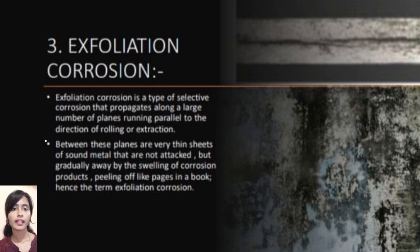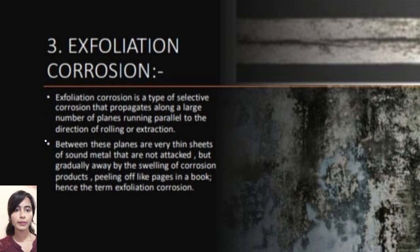Exfoliation corrosion. Exfoliation corrosion is a type of selective corrosion that propagates along a large number of planes running parallel to the direction of rolling or extrusion. Between these planes are very thin sheets of sound metal that are not attacked but are gradually pushed away by the swelling of corrosion products, peeling off like pages in a book — hence the term exfoliation corrosion.